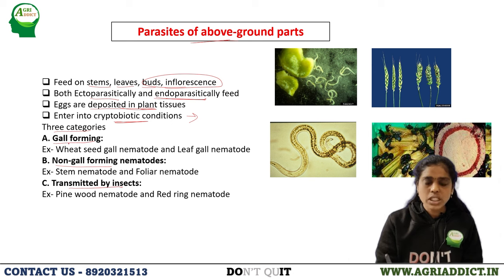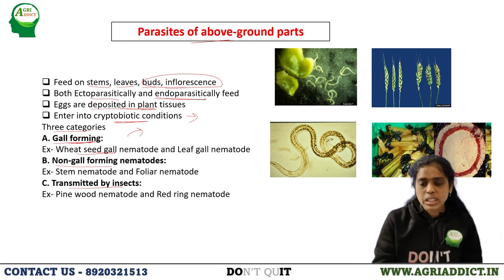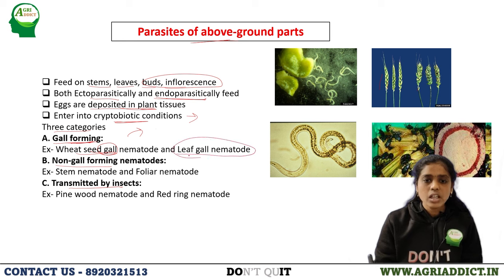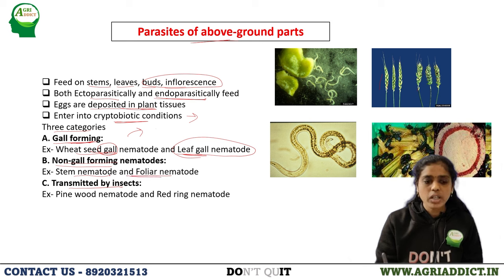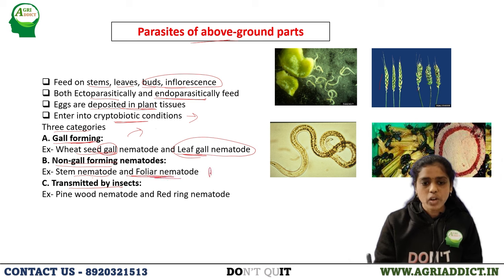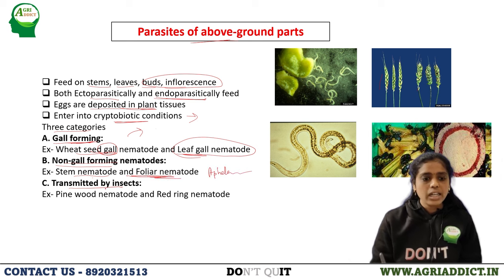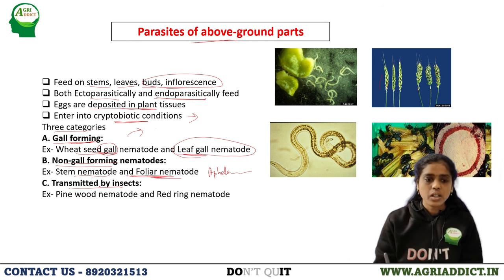Gall-forming above-ground nematodes: wheat seed gall nematodes enter into the floral primordia and formation of galls takes place. Anguina balsamophila also forms galls on leaves. Non-gall forming nematodes include stem nematodes and foliar nematodes. Ditylenchus dipsaci comes under stem and bulb nematodes, mainly affecting the stem region. Foliar nematodes are Aphelenchoides species.